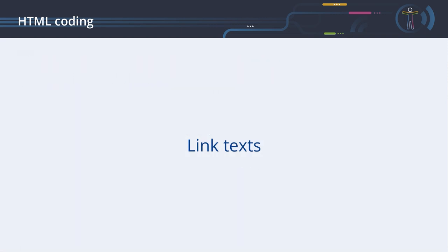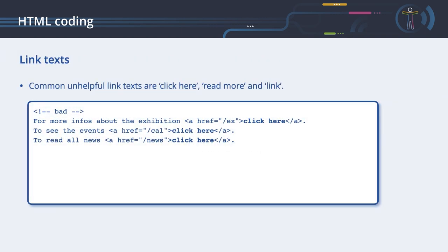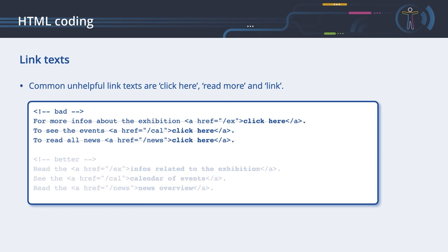Link texts. As we have seen before, a screen reader can display a list of all the links on a web page. Therefore, the content of the hypertext links should be descriptive. Here is a bad example: a screen reader would present a list with three items all named 'click here'. A user will have no possibility to differentiate them. A better approach gives each link unique content, which makes it easier to interpret their meaning when presented in a list.